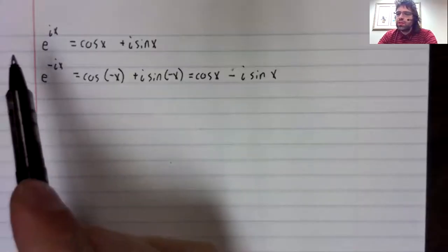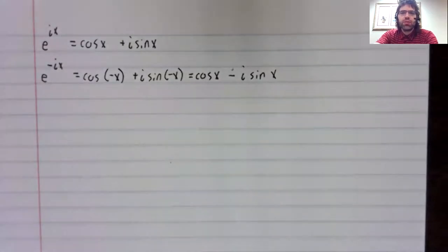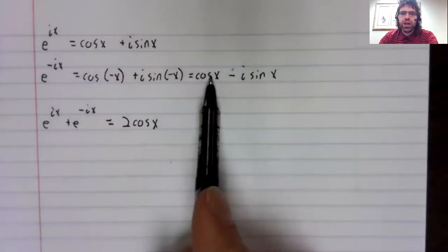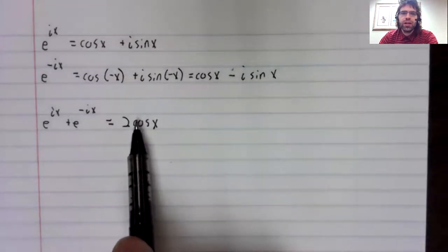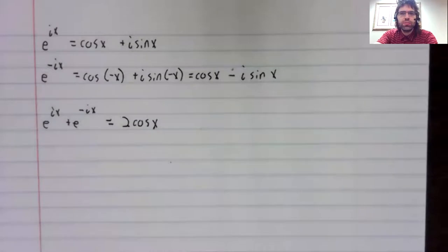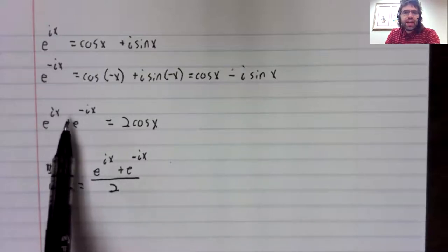Now, let's take these terms and add them together. This cosine plus this cosine is twice the cosine. Our positive and negative sine cancel out. Divide both sides by two, and we get an expression for the cosine in terms of imaginary exponentials. If instead of adding,